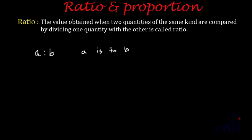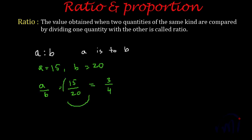Suppose a is 15 and b is 20. The ratio a:b can be written as 15:20, or 15/20. However, we should always write the ratio in its simplest form, just as we simplify fractions. The highest common factor of 15 and 20 is 5. Dividing both by 5 gives 3:4. So the simplest form of 15:20 is 3:4. We get smaller numbers, which are easier to handle.